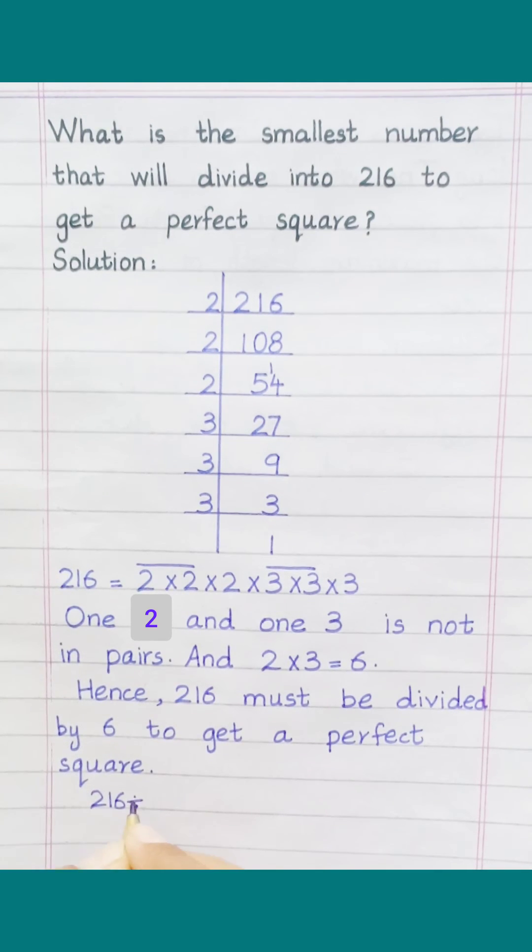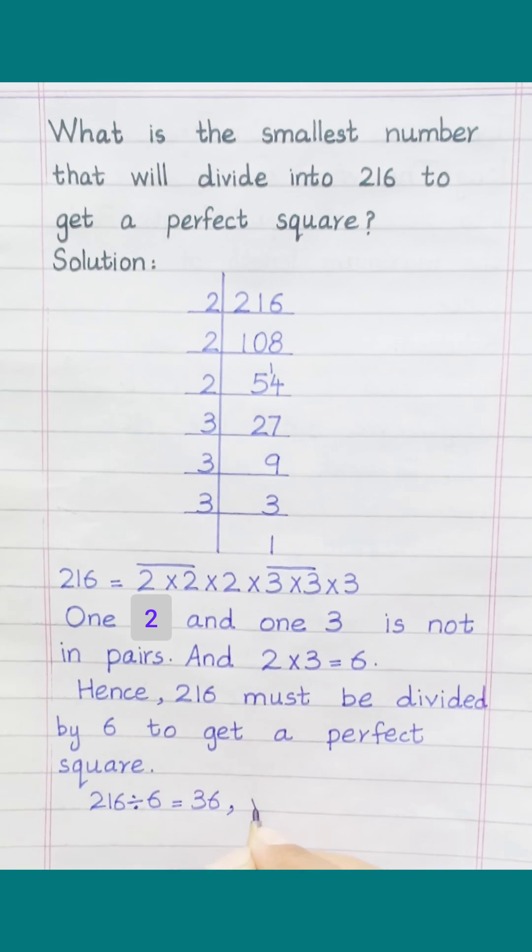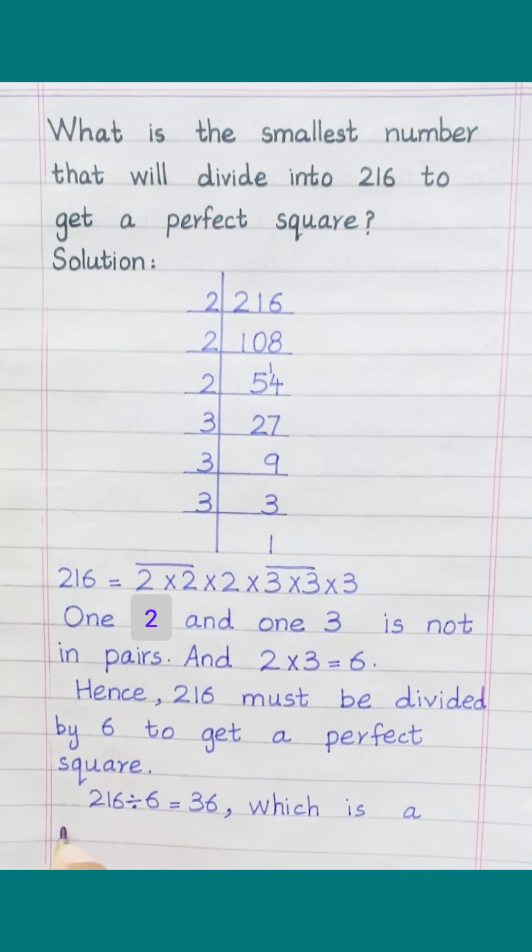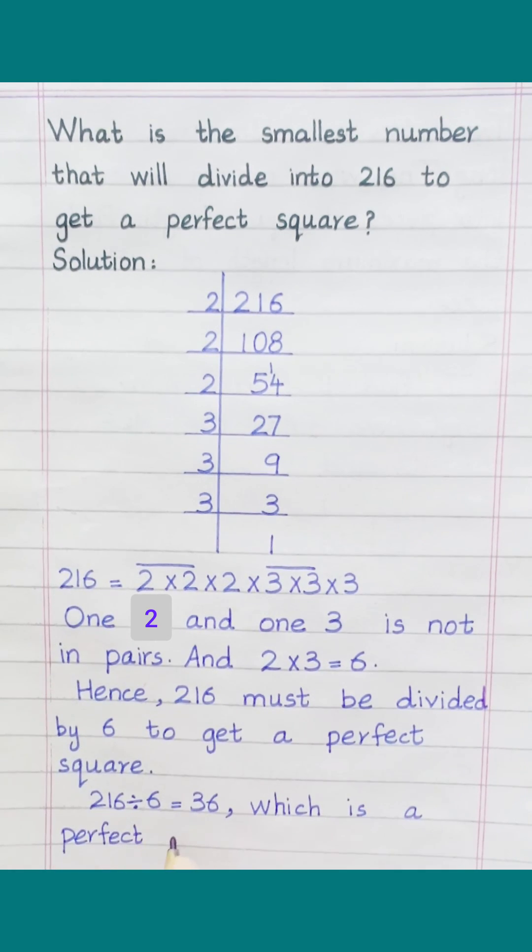216 divided by 6 equals 36, which is a perfect square.